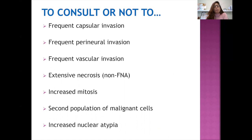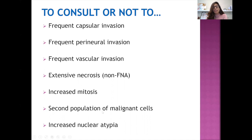When to be concerned about a pleomorphic adenoma: it can occasionally show capsular invasion, perineural invasion, necrosis (especially post-FNA), and mitoses. However, if you see more than one of these features in conjunction, or they are frequent — frequent capsular invasion, perineural invasion, vascular invasion, extensive necrosis without history of a previous procedure, lots of mitoses — and especially if there is a second population of identifiable high-grade or malignant cells with increased nuclear atypia, these are situations in which I would suggest consultation with a head and neck pathologist.